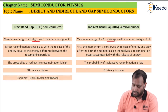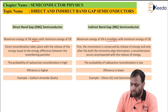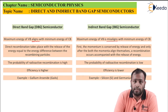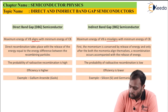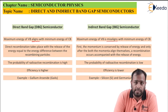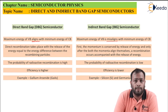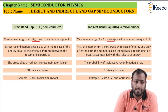Examples of direct band gap (DBG) semiconductors include gallium arsenide, while silicon and germanium are indirect band gap (IBG) semiconductors. Silicon and germanium are pure semiconductors but have a certain level of discontinuity because they are IBG semiconductors, which limits their practical use. This is why we have synthesized new semiconductors such as gallium arsenide — an alloy of gallium and arsenic — specifically because it is a direct band gap semiconductor. This could be a viva question: why is DBG semiconductor preferred? Because in IBG semiconductors there is always energy loss due to realignment, which does not occur in direct band gap semiconductors.